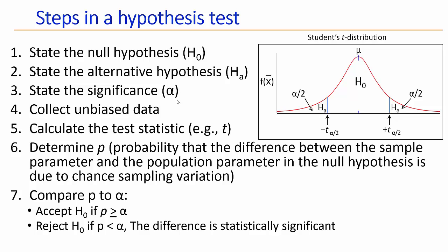We then collect unbiased data in step 4. That usually involves some sort of random sampling scheme. After you collect your data, use the information to calculate a test statistic. Today we are going to calculate a statistic known as t. From t, you then can calculate p.